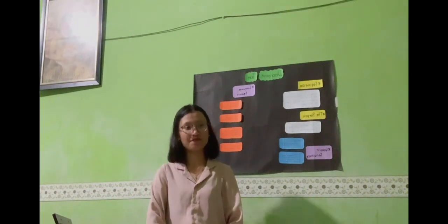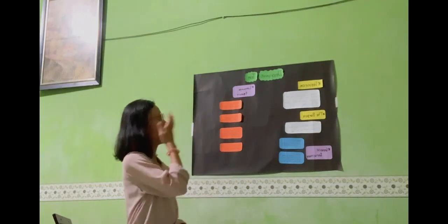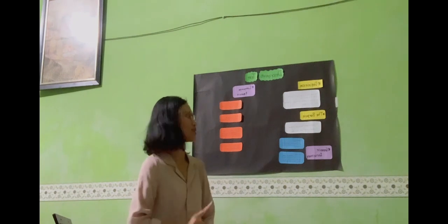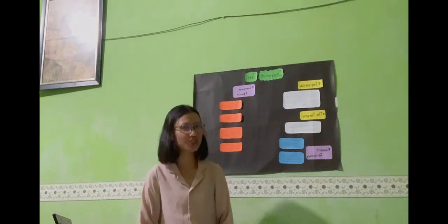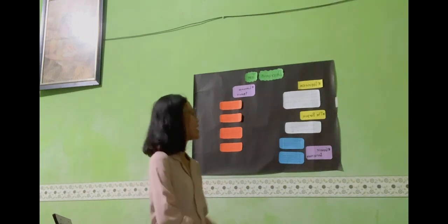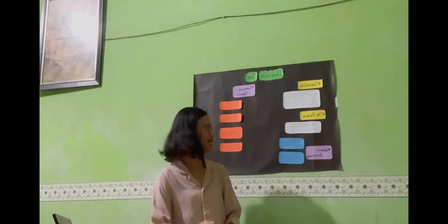Next is the generic structure of descriptive text. Does anyone know what the generic structure of descriptive text is? No one knows? Okay, I'll explain. Descriptive text has two generic structures. The first one is identification and the second one is description. Identification contains the introduction of a person, place, animal or object that will be described. Description contains a description of something — such as animal, things, person or place — by describing its features, forms, colors, or anything related to what the writer describes.